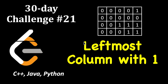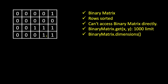This is day 21 of the 30-day lead coding challenge and the problem is 'Leftmost Column with One.' We're given a binary matrix where the rows are sorted — all values are either zero or one. Sorted means if you have a one at some position, everything to the right will be one and everything to the left of the first one will be zero. Columns are not sorted, only rows are sorted.